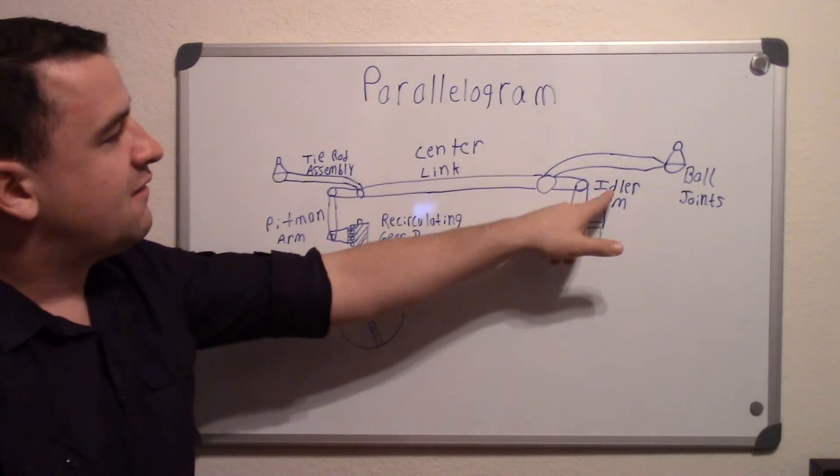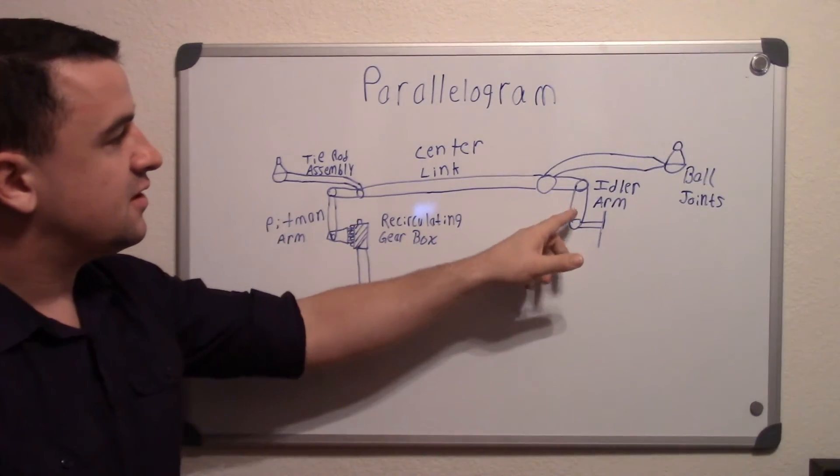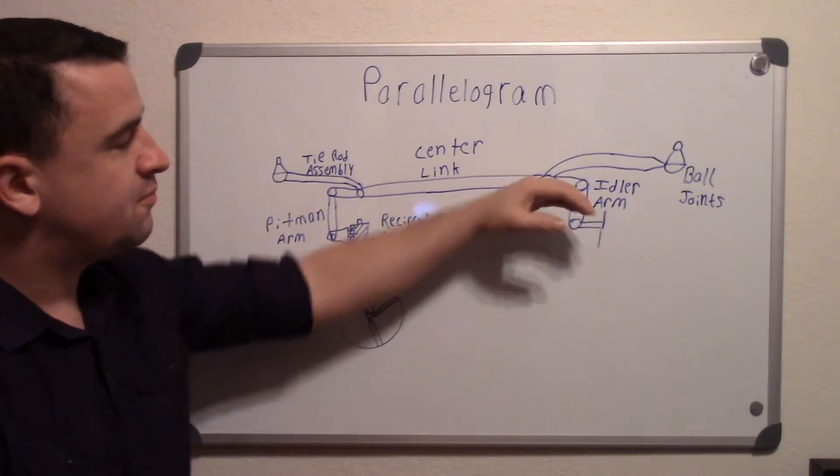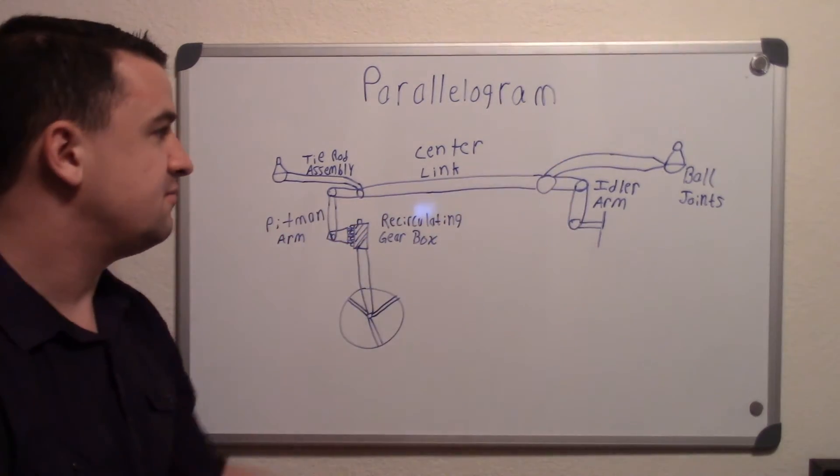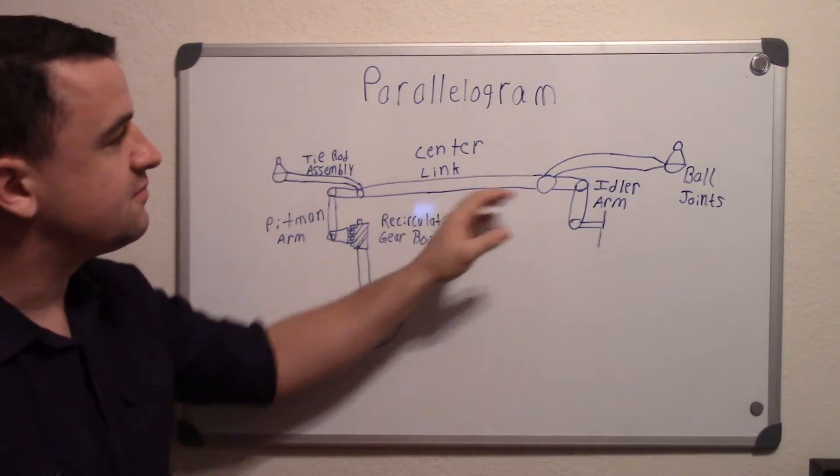Over here you have the idler arm, which kind of acts the same as the Pittman arm, but it's just simply a resting spot for it to idle on. This doesn't actually make it move; it just moves with it.